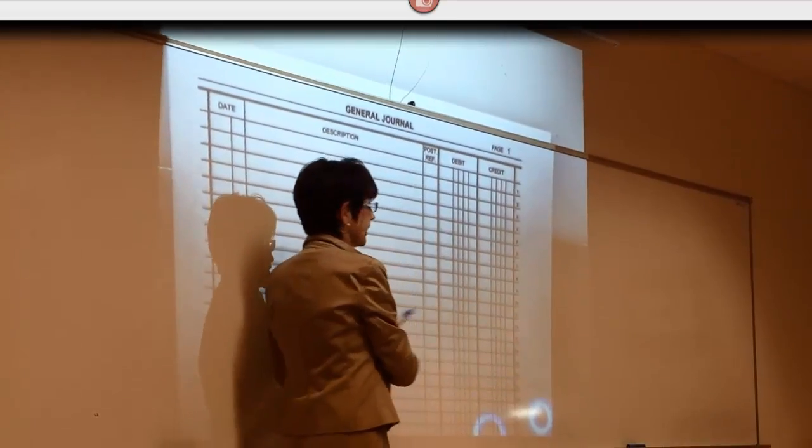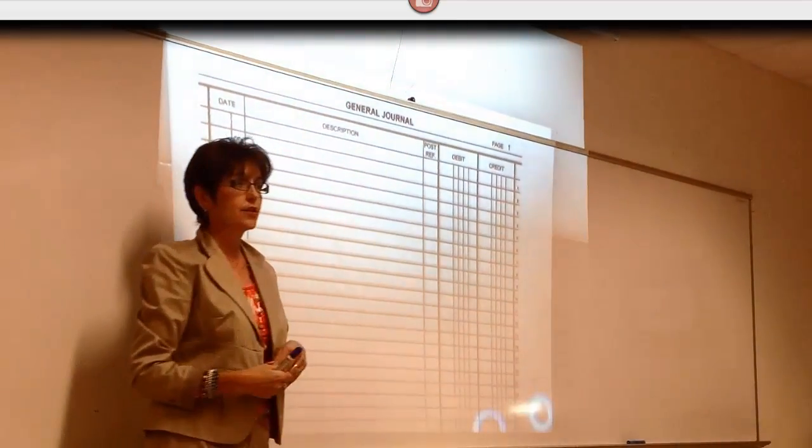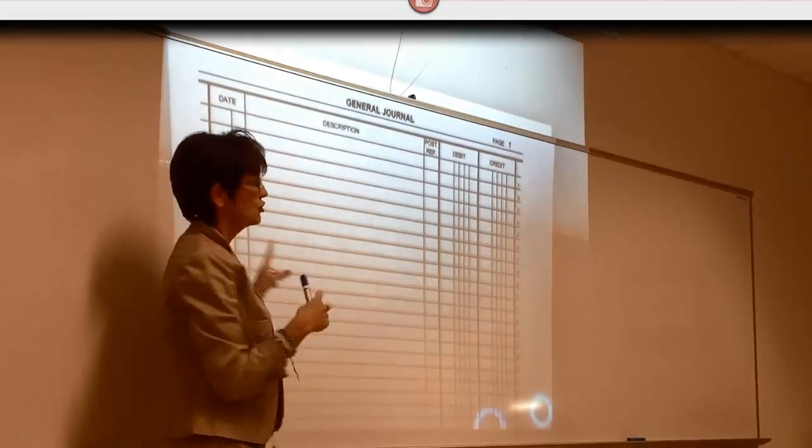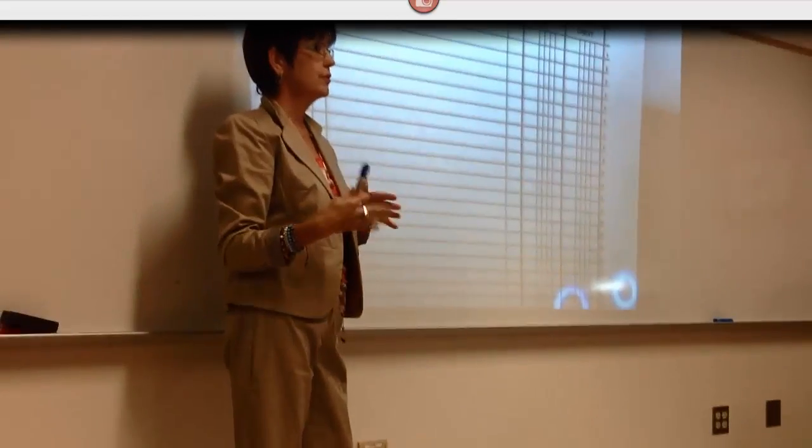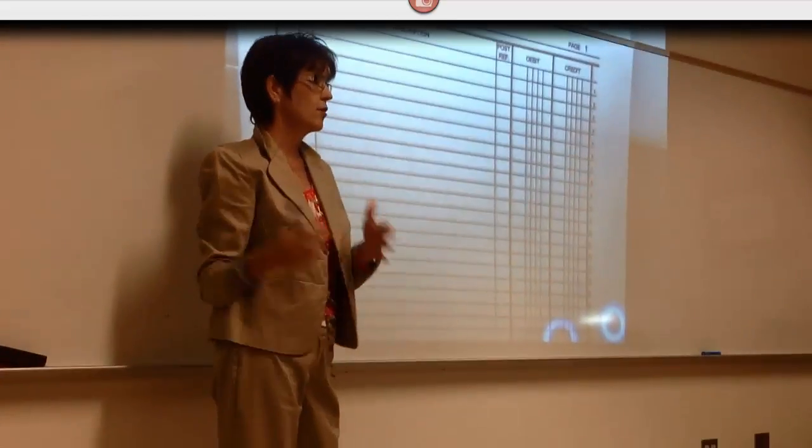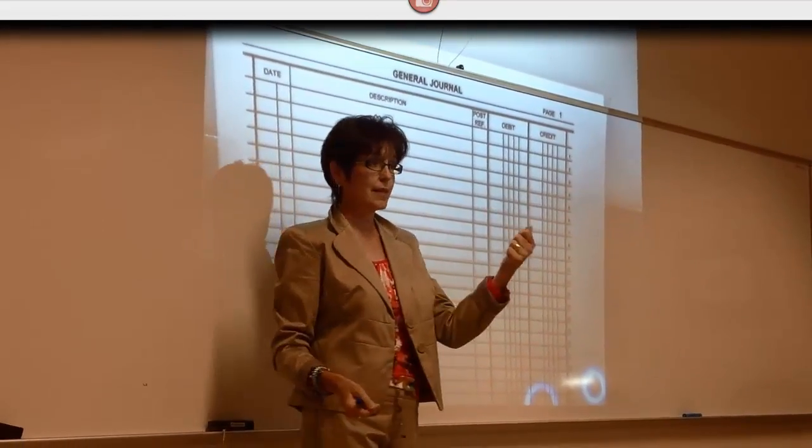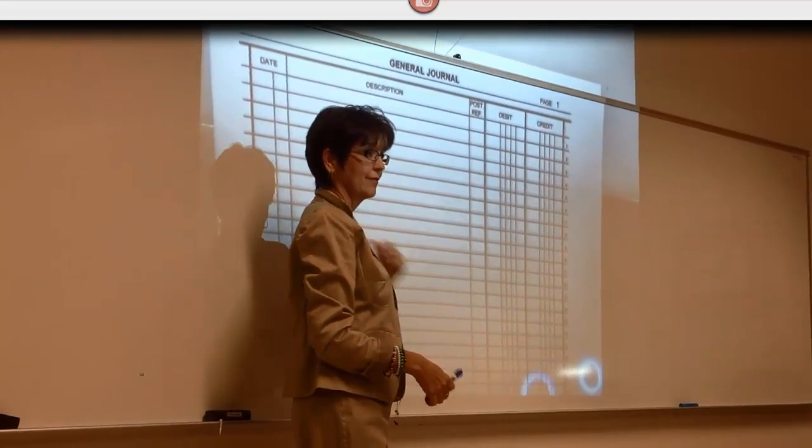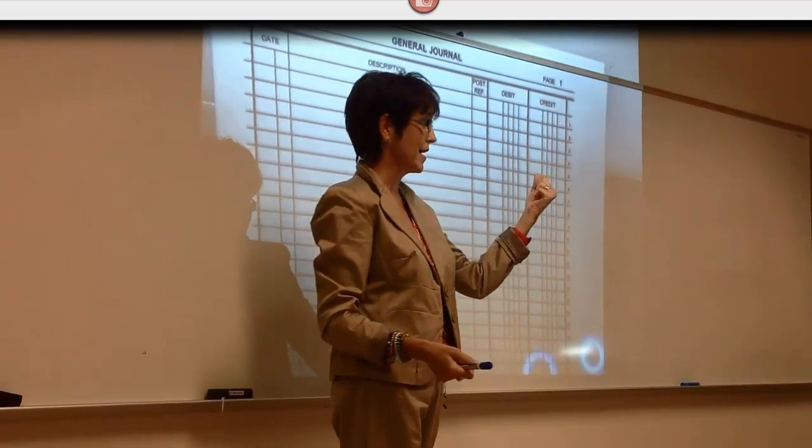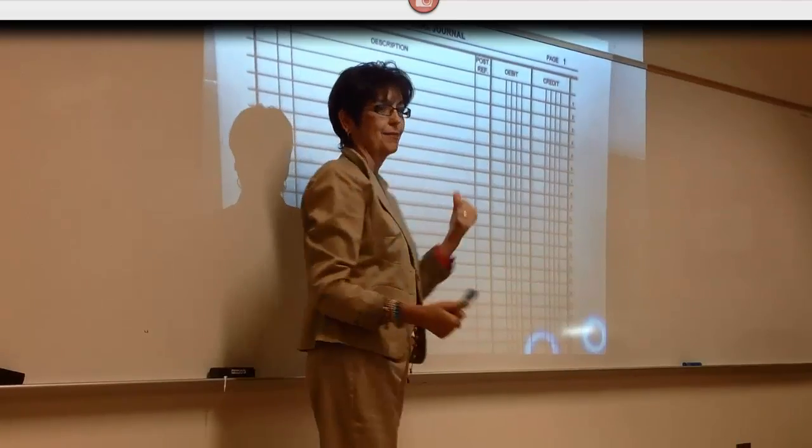When you put information into the journal, it is called journalizing. And you're going to do it in a particular order. And that order is date order as it comes in. So if this is my company and I have a receipt for fuel, I can put that one in first. And the next one is receipt for rent that I paid rent, I can put that one in next.